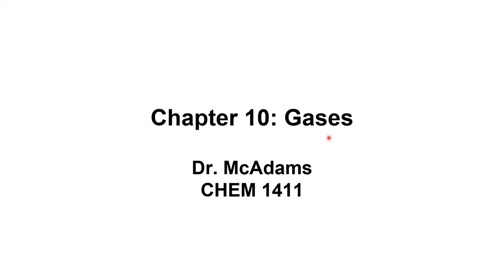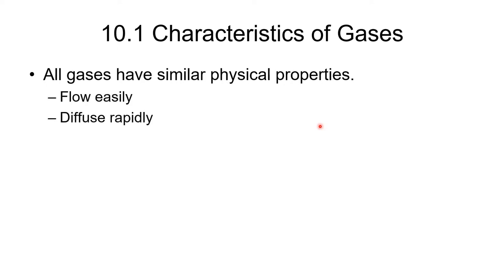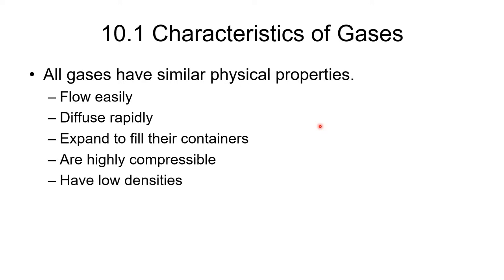So without further ado, let's look at chapter 10. Well we first want to start with the characteristics of gases. Gases will behave in a very similar fashion physically. Now chemically they can be quite different, but physically they're going to have similar physical properties. That is, they're going to flow easily. They will diffuse rapidly, and that's just because the molecules move around quite easily. They will expand to fill their containers, and they are highly compressible. And the reason for this is that there is lots of empty space in between the molecules. We'll also find that they typically have pretty low densities compared to things like liquids and solids.